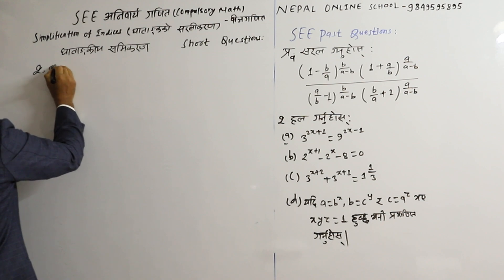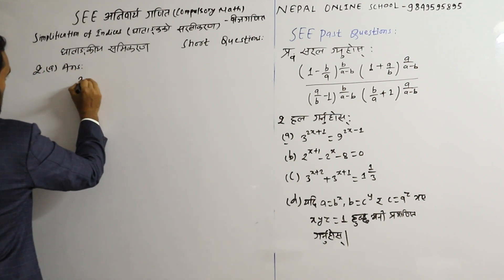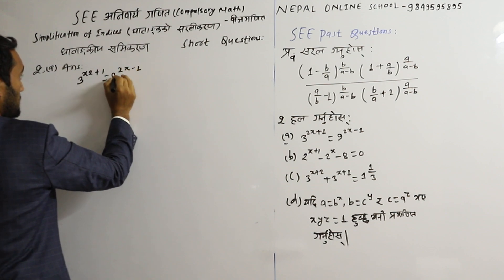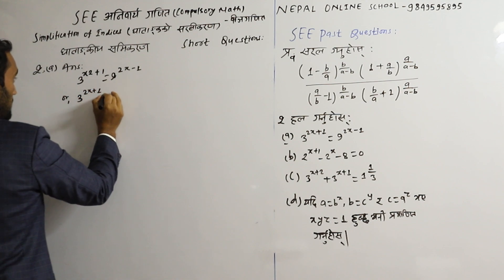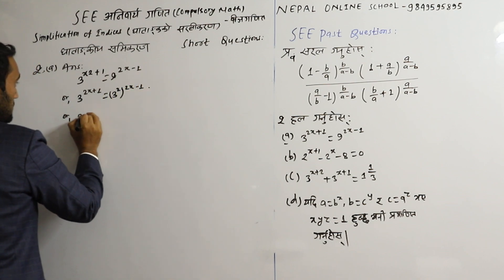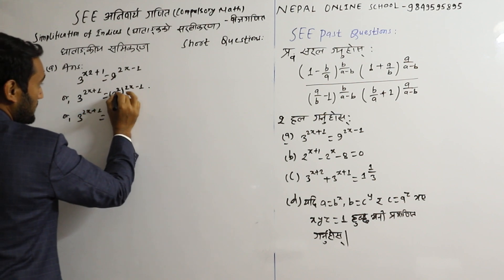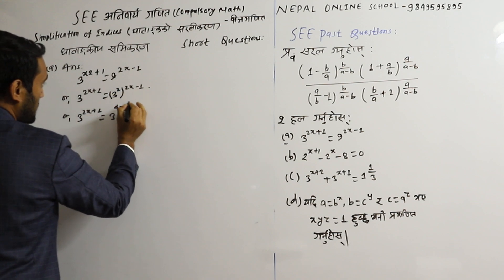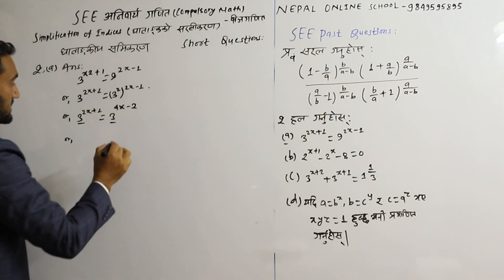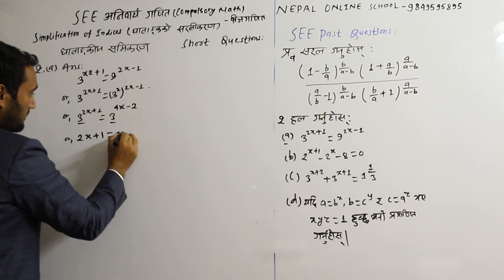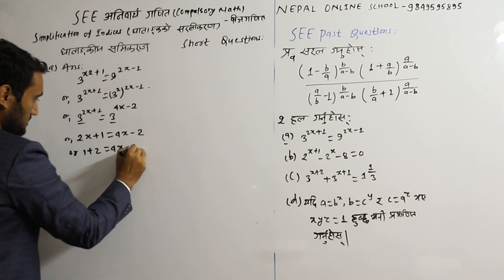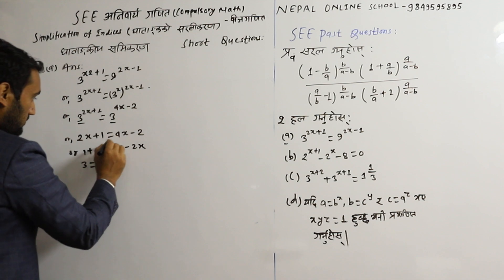The next question: 3^x times x^2, or 2x plus 1 equal to 9^(x minus 1). Since the bases are equal, power: 2x plus 1 equals 4x minus 2. Now, 1 plus 2 equals 4x minus 2x, so 3 equals 2x.